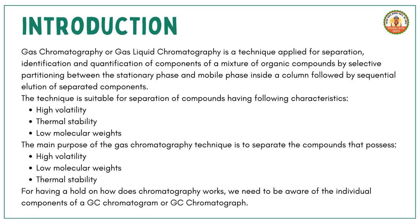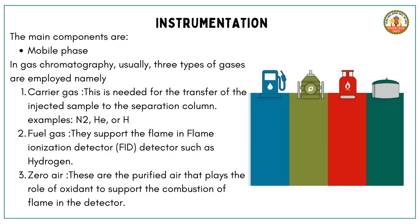Gas chromatography relies on a few key components. The mobile phase in GC uses three main types of gases. First, the carrier gas transports the injected sample to the separation column — examples include N2, He, or H2. Second, fuel gases support the flame in certain detectors, such as hydrogen.